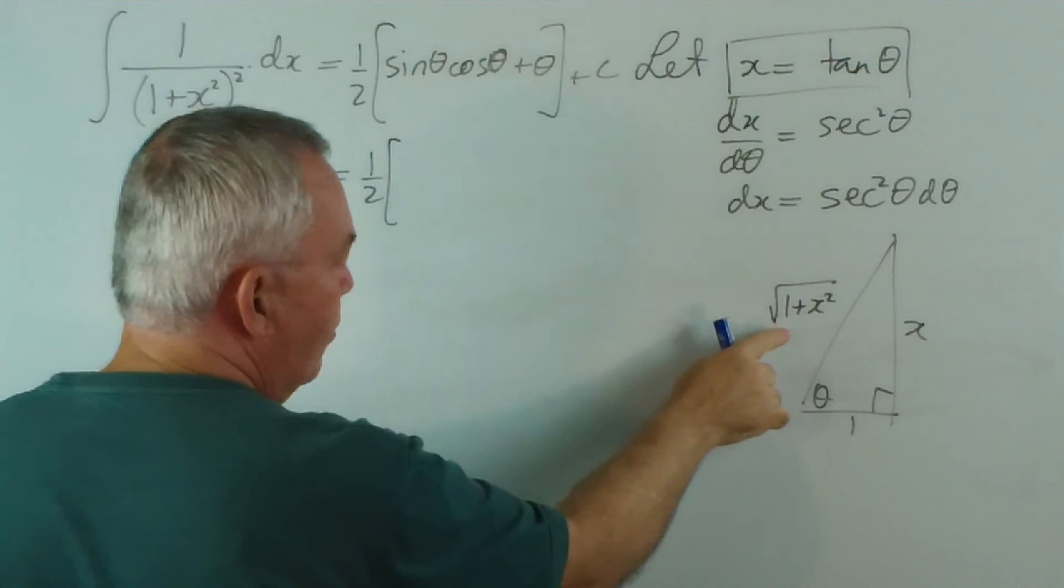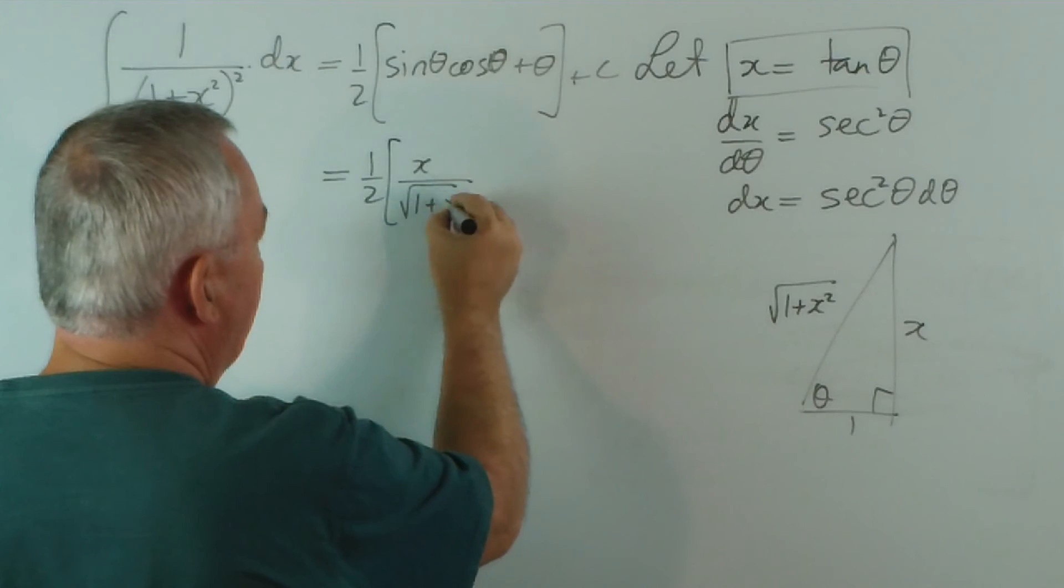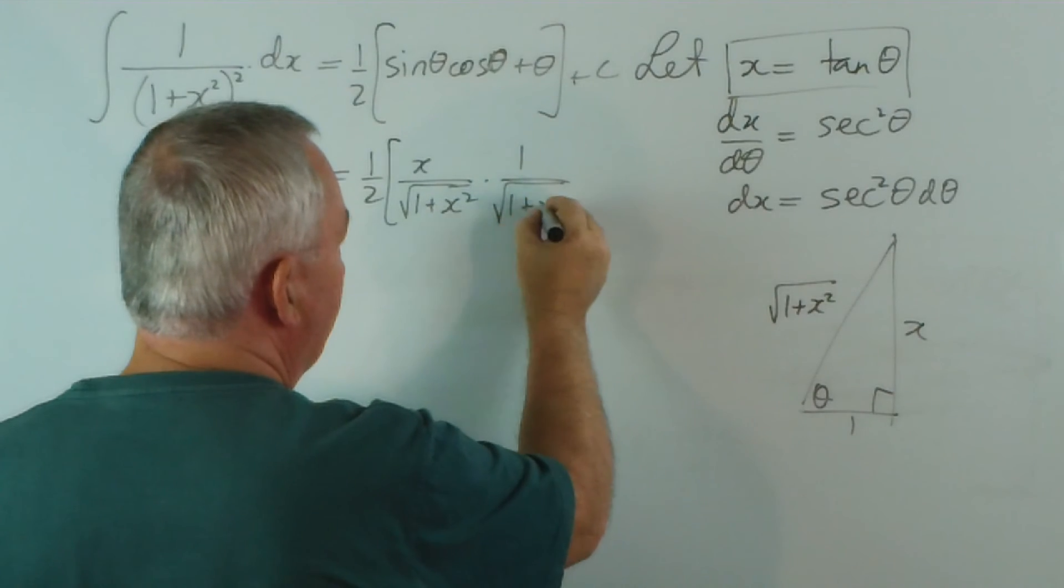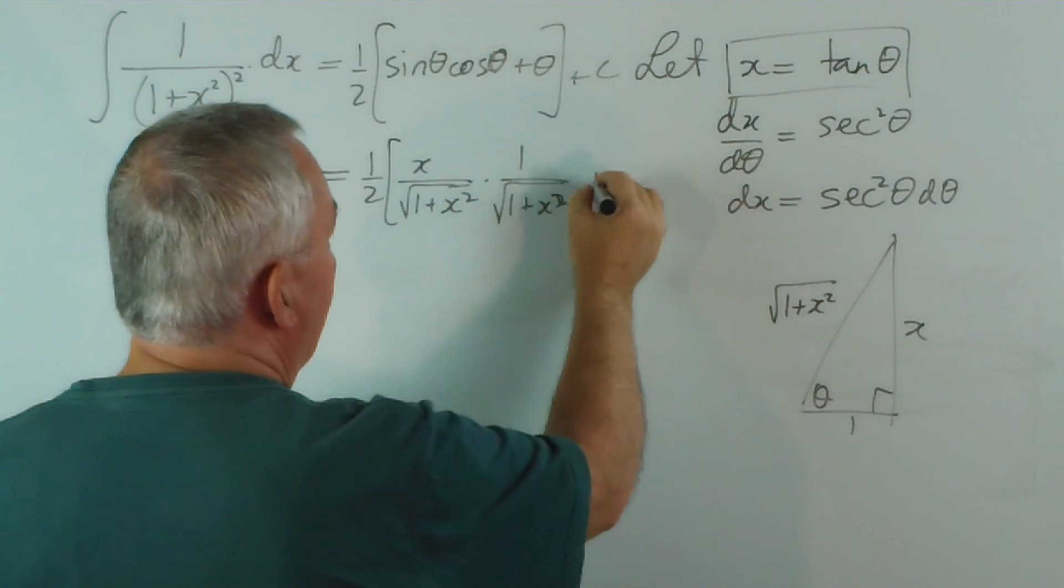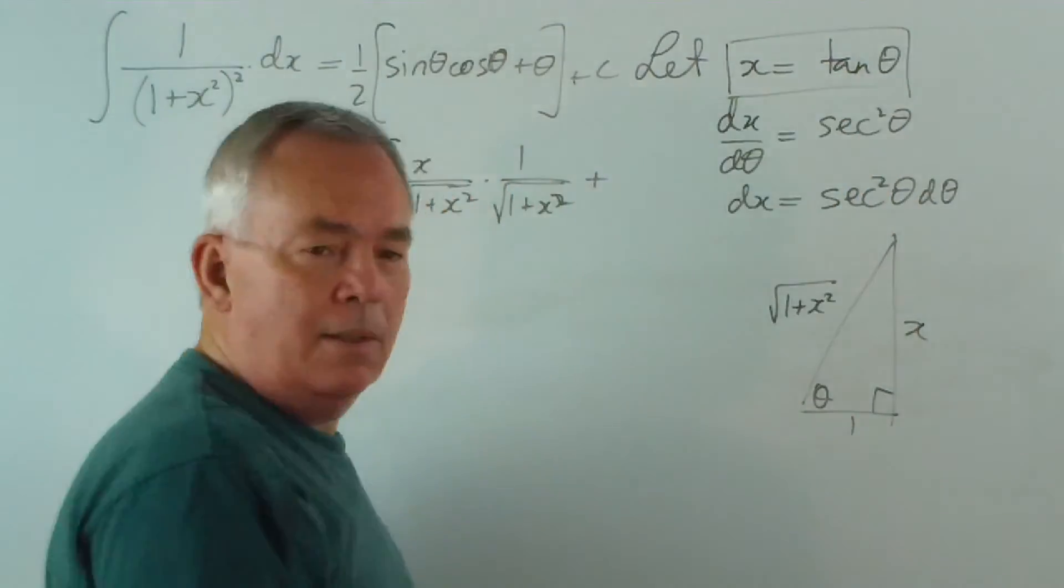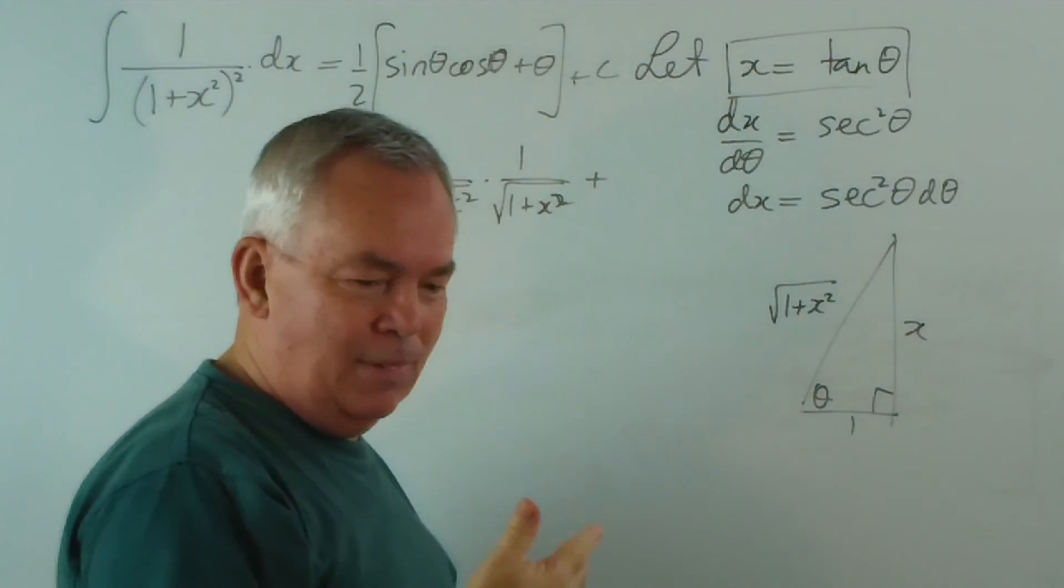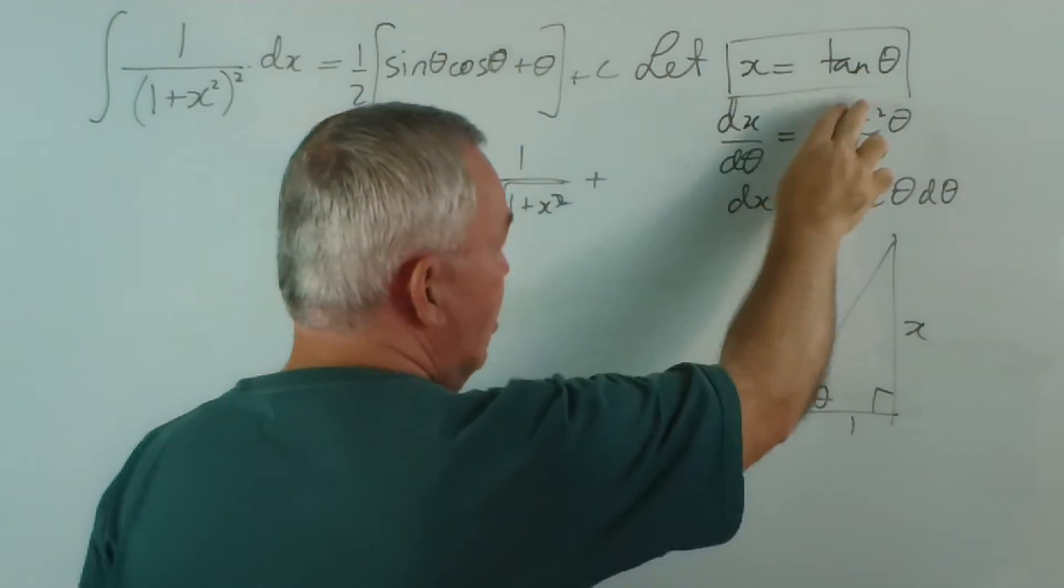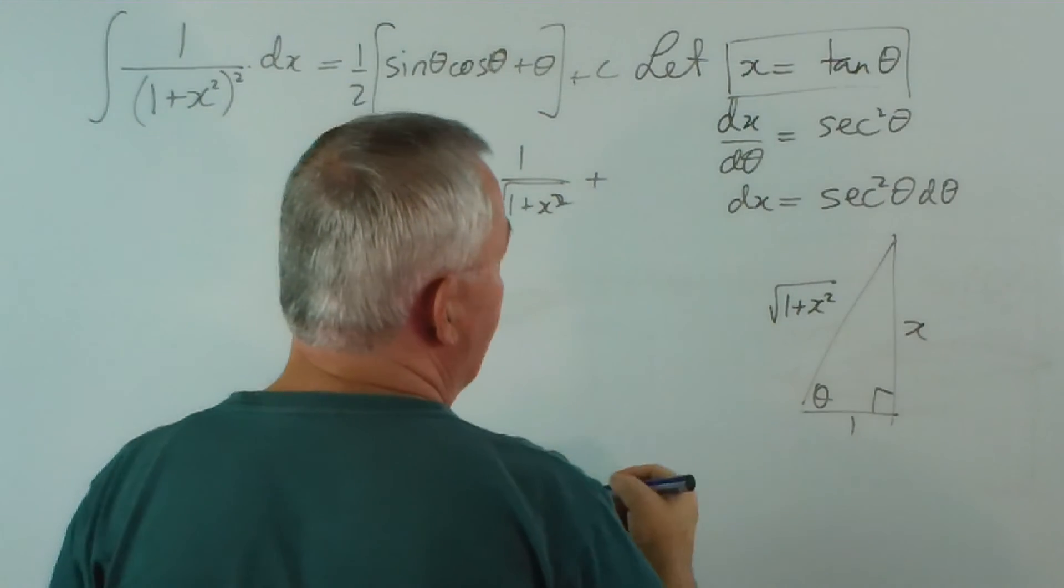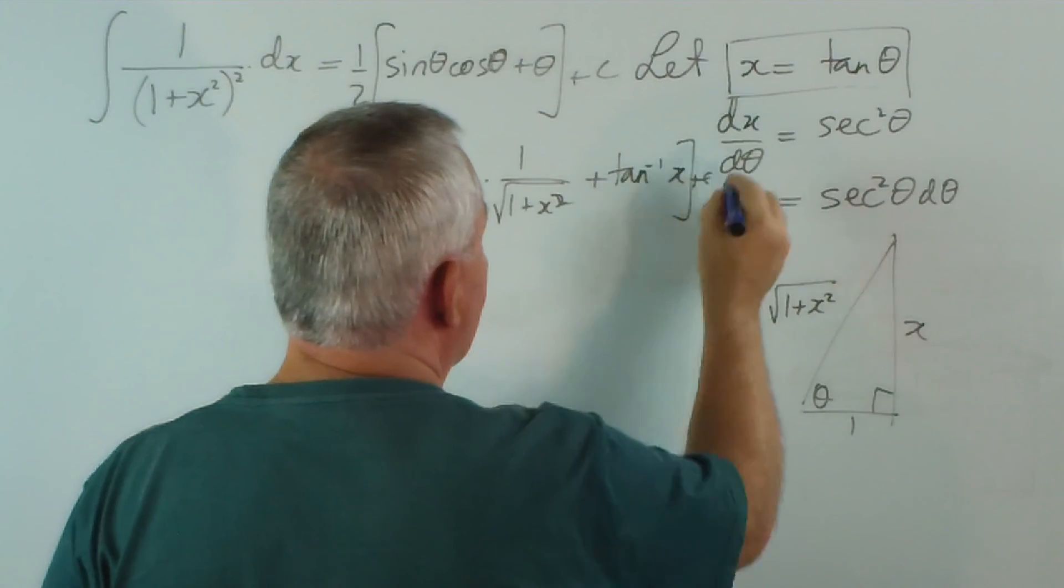Well sin θ from this will be opposite over hypotenuse: x/√(1+x²). cos θ is adjacent over hypotenuse: 1/√(1+x²). θ we get from this expression by taking the inverse tangent of both sides. Remember the inverse tangent, it's even there in the terminology, is the inverse function of tangent, which effectively undoes the operation. So θ is the inverse tan of x.